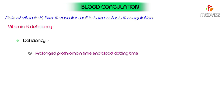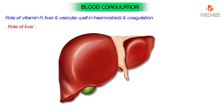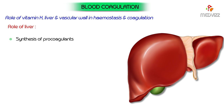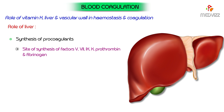Vitamin K deficiency: in the deficiency of vitamin K, prothrombin time and blood clotting time are prolonged, and serious hemorrhages may occur. Role of liver: the liver plays a significant role in the coagulation mechanism. It is the site of synthesis of pro-coagulants — factors 5, 7, 9, 10, prothrombin, and fibrinogen.